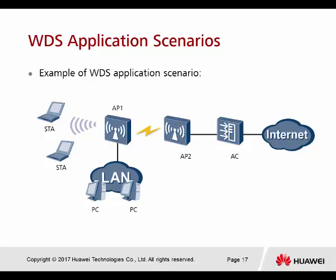Here is a WDS application scenario. We have one AC (access controller), AP number two, and AP number one. Instead of using a LAN cable to form the connection, we can use wireless bridging — of course, both APs need to support this feature. This is called a point-to-point connection, where AP one and AP two connect only through wireless.